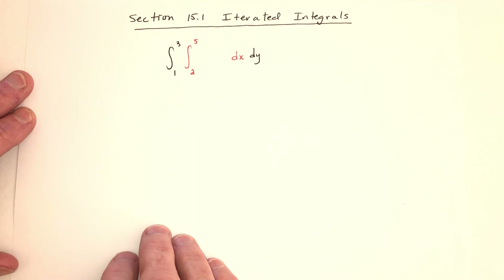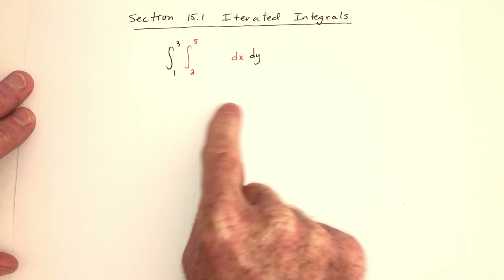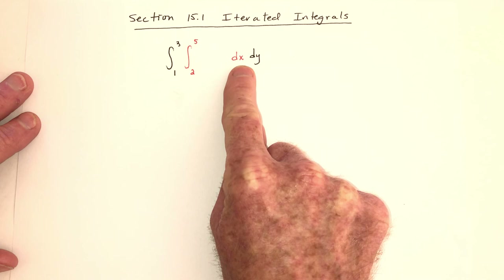All right, chapter 15 - we finally get to integrate. Not only do we get to integrate, we even get to do double integrals. Iterated integrals - iterated just means you do a process and then you do it again, several iterations. Right now we're going to be doing double integrals, so instead of just having dx, we'll have dx and dy.